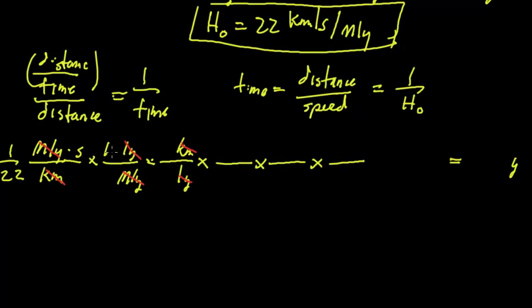So there's 10 to the 6 light years in one mega light year. There's 10 to the 13 kilometers in one light year. And then we have seconds on the bottom, seconds to minutes, minutes to hours, hours to days, and one more days to years.